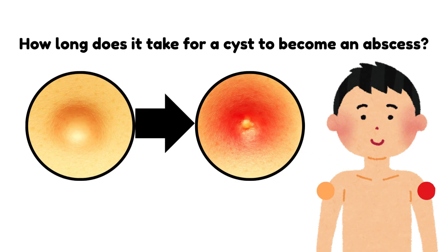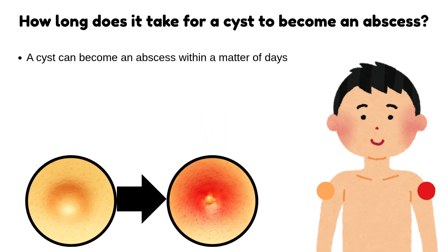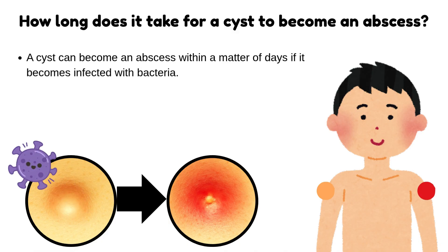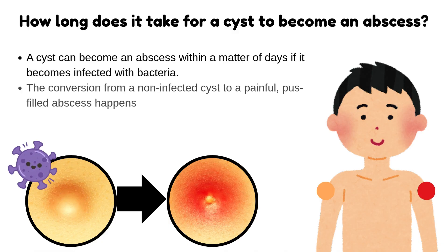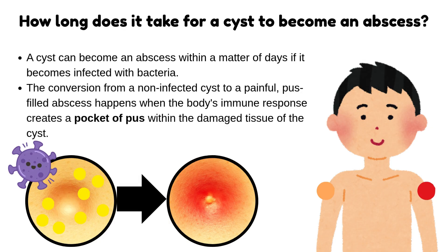How long does it take for a cyst to become an abscess? A cyst can become an abscess within a matter of days if it becomes infected with bacteria. The conversion from a non-infected cyst to a painful, pus-filled abscess happens when the body's immune response creates a pocket of pus within the damaged tissue of the cyst.